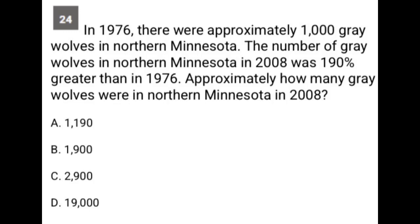This question is a translate word problem question. Given the length of the question, TWP questions are typically four or more lines long. The whole idea with the TWP strategy is that you do not read the entire question all the way through. Instead, you stop at the end of each sentence, write down any quantitative information, and make sure you understood what you read in the sentence you just finished before moving on to the next sentence.